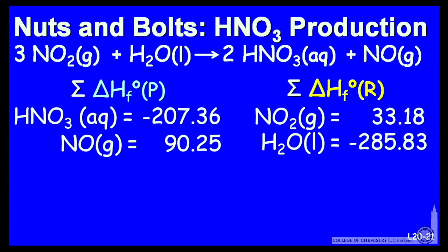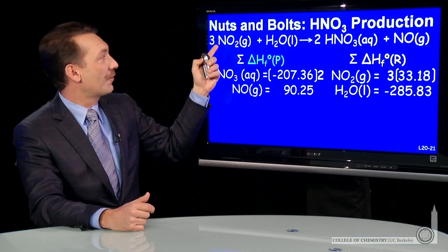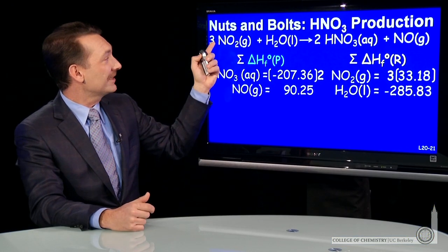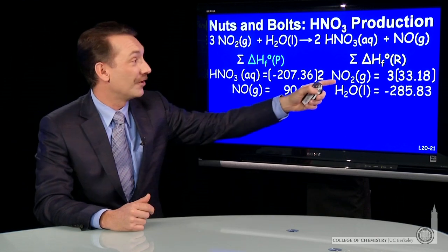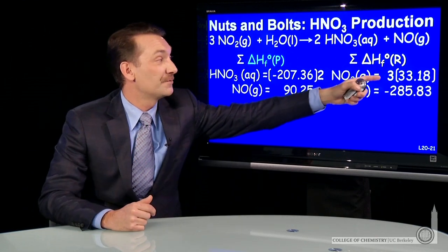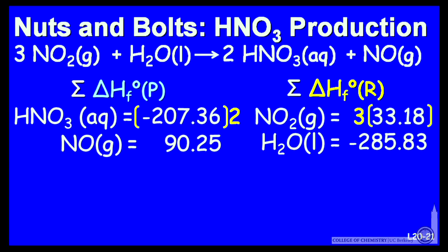Now we have to sum them up, but we have to realize there are two moles of nitric acid formed in this chemical reaction, so let's account for that — two times the enthalpy of formation of nitric acid. For the reactants, there are three moles of NO2 gas involved, so let's multiply that enthalpy of formation by three, and we can do that math.